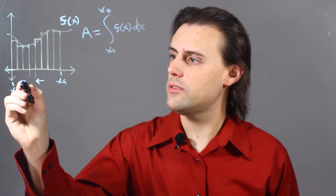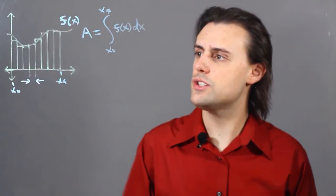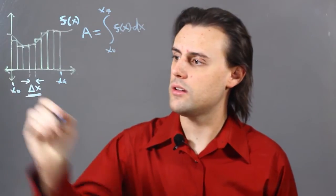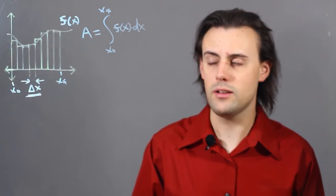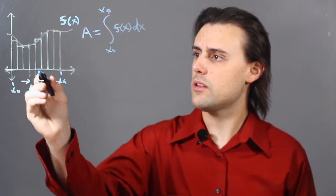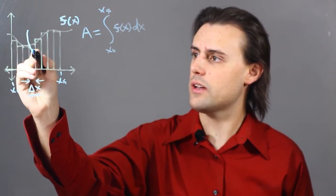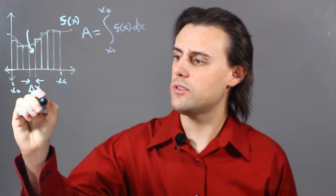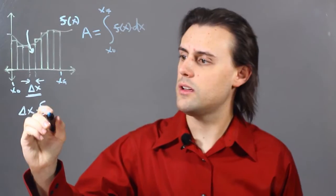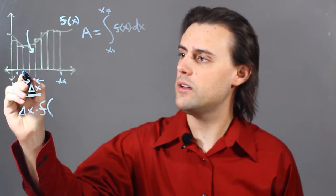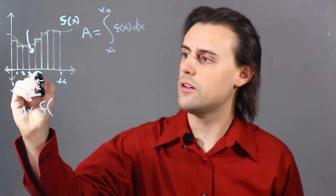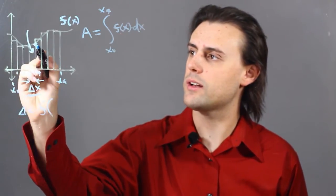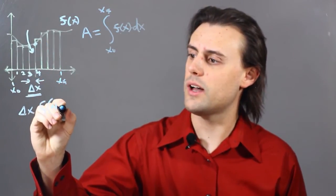And the base or width of each of these rectangles is the same, and it's going to be some constant non-zero value, delta x. And so, the area of, say, this rectangle would be delta x times my function evaluated at 1, 2, 3, 4, because that's where the connection is made between the tip of the rectangle and the function, 4 times delta x.